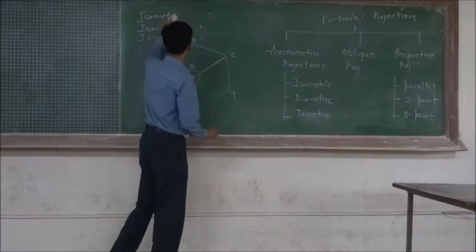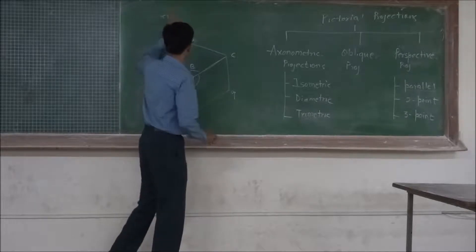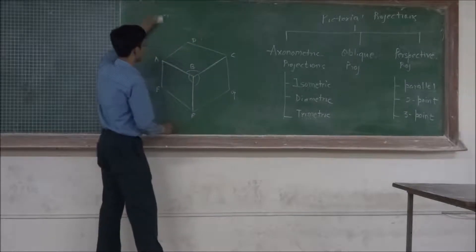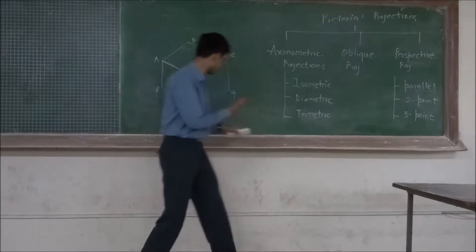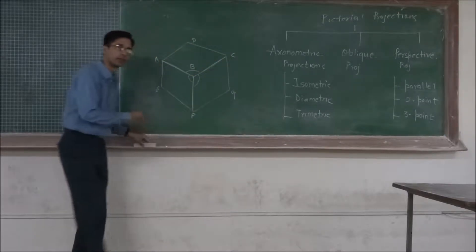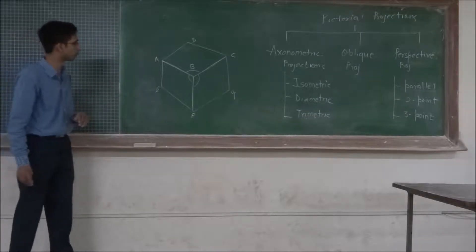These three — isometric axes, isometric lines, and isometric planes — are very important terms which we generally use in isometric drawings. We will use these terms whenever required while solving problems.